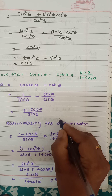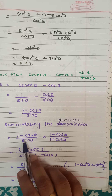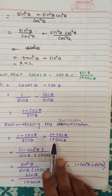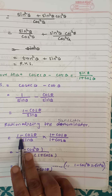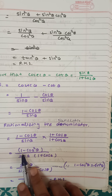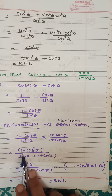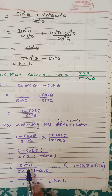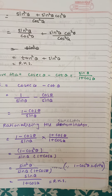We need to rationalize the numerator — 1 minus cos θ — by multiplying and dividing by 1 plus cos θ. This gives (a minus b)(a plus b) = a² minus b² in the numerator. So 1 minus cos²θ = sin²θ, with the denominator as it is. One sin θ cancels, leaving sin θ upon (1 plus cos θ), which equals the right hand side.